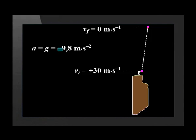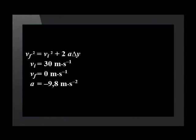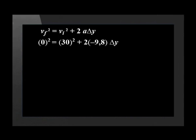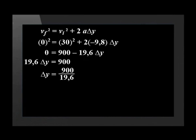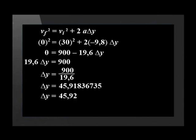We are asked to find the maximum height reached above the point the ball leaves the hand — that is, the ball's vertical displacement for this interval. We use the equation vf² = vi² + 2aΔy because the only unknown it contains is displacement. Substituting: 0² = 900 + 2 times negative 9.8 times displacement, giving negative 19.6 times displacement. We make displacement the subject. The answer on the calculator rounds off to two decimal places, giving 45.92.